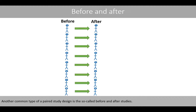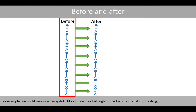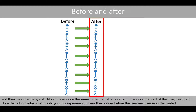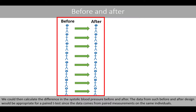Another common type of paired study design is the so-called before and after studies. For example, we could measure the systolic blood pressure of all eight individuals before taking the drug and then measure the systolic blood pressure on the same individuals after a certain time since the start of the drug treatment. Note that all individuals get the drug in this experiment, where their values before the treatment serve as the control. We could then calculate the difference in the systolic blood pressure before and after. Data from such a before-and-after design would be appropriate for a paired t-test since the data comes from paired measurements on the same individuals.